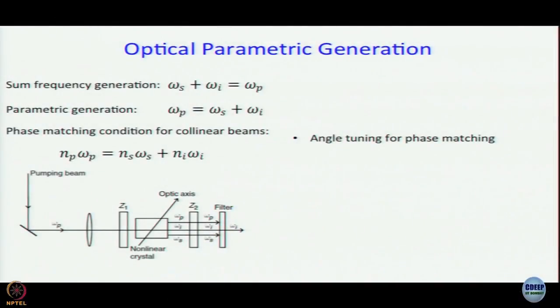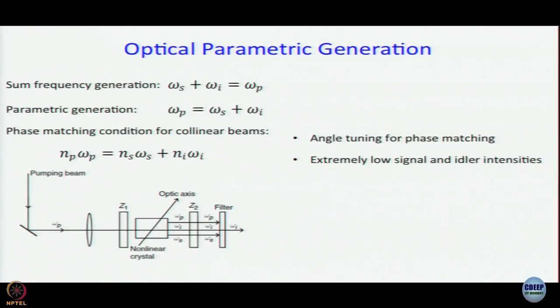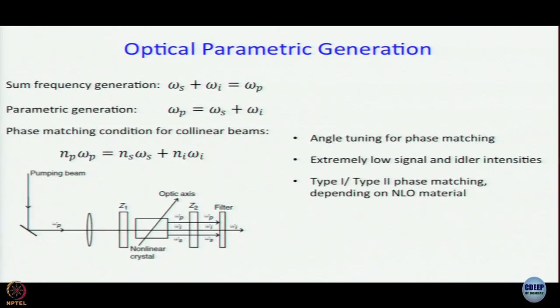The problem is that the intensity is very, very small. You can do angle tuning for phase matching to decide omega_s and omega_i and optimize the conditions. Signals are very low - even sum frequency generation has a typical efficiency of about 20 percent, whereas here typical efficiency would be 2 percent, 1 percent, or less depending on the material. Depending on the NLO material, you can have type 1 or type 2 phase matching.